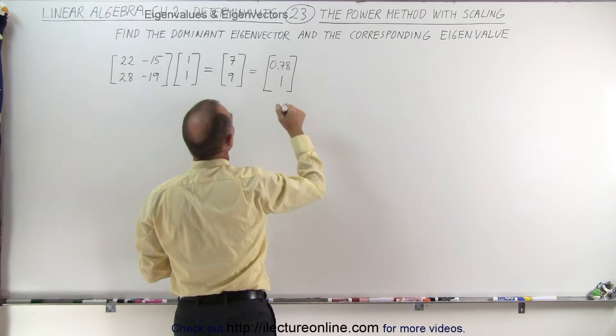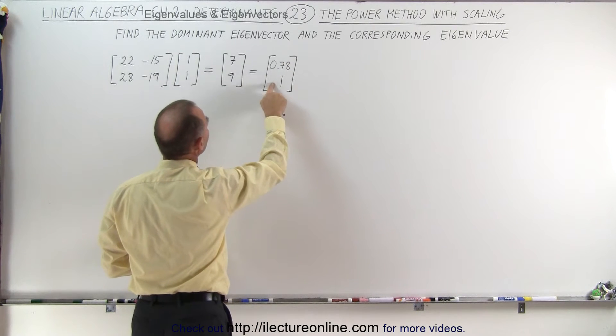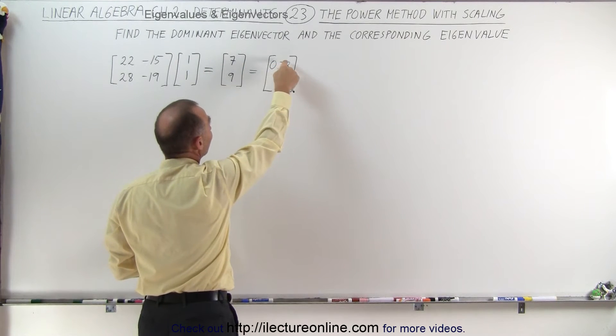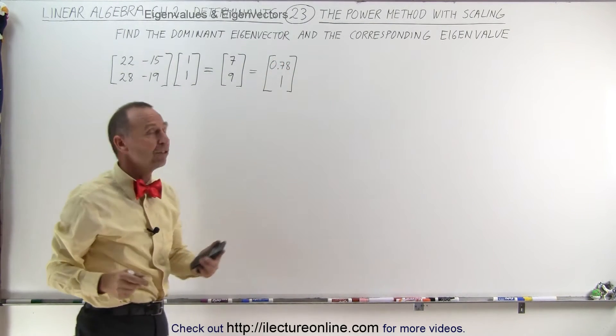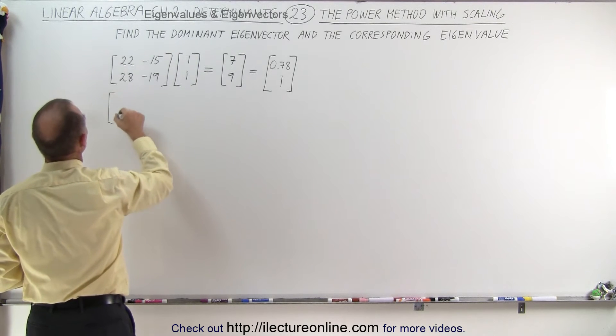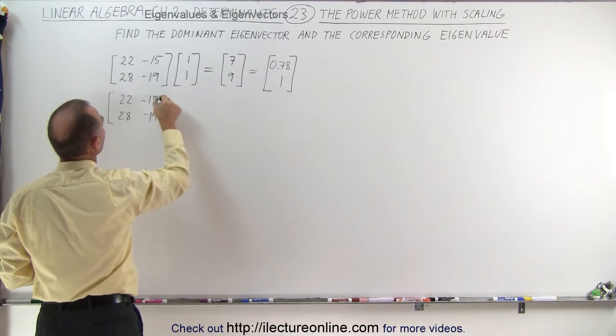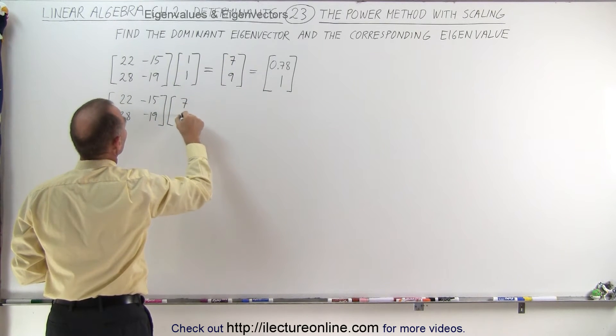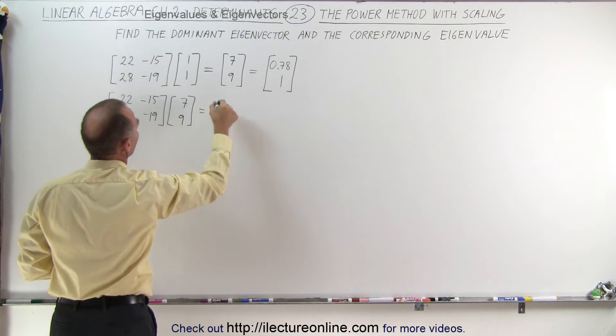That's what we mean by scaling. We take the largest number make it 1 and then we write the second or third or however many numbers we have as a fraction of that, in this case 0.78. So we continue 22, 28 minus 19 and we do indeed use 7 and 9 that makes it easier as our second vector.